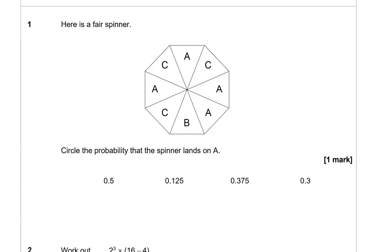Question 1. Here is the fair spinner. Circle the probability that the spinner lands on A. So we're focusing on A. Let's have a look. We've got one, two, three, four A's.